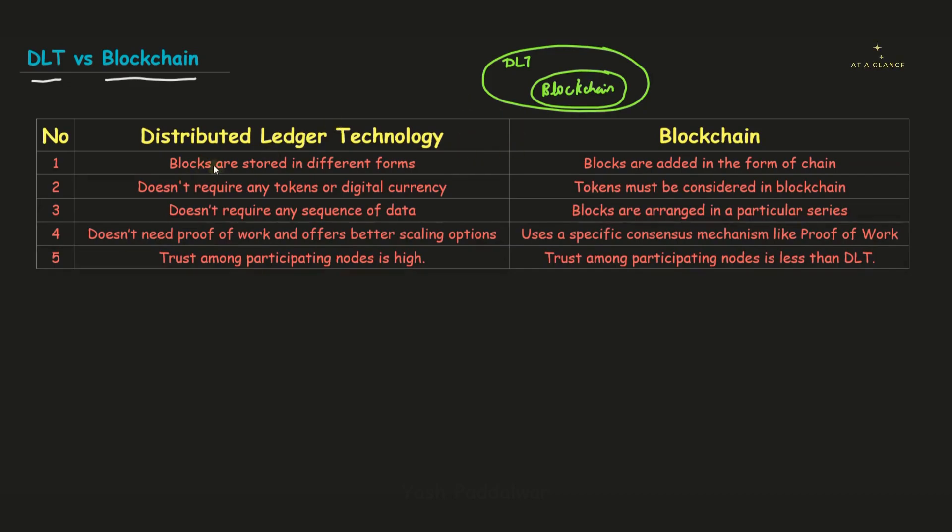The very first difference is that blocks in distributed ledger technology are stored in different formats. Whereas in blockchain, we store the blocks in the form of chain. If you remember, we already have discussed how blocks are stored in blockchain. The blocks are stored in linear sequential manner. Whenever a new block has to be added, it will only be added at the end of the entire blockchain network. Every single block will be having its own unique identity, that is nothing but nonce, and each current block will store the previous block's information so that it forms a chain of network.